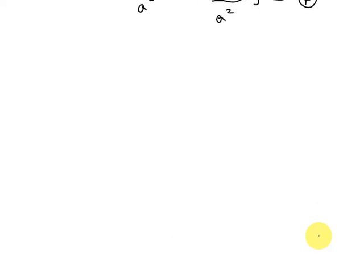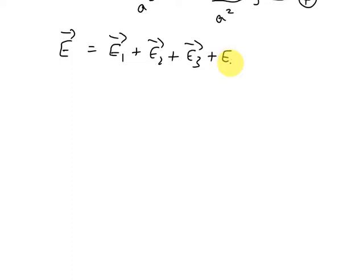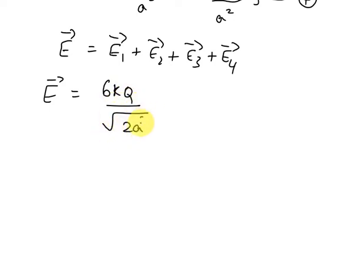Therefore, the net field at P is E vector = E1 vector + E2 vector + E3 vector + E4 vector, which gives E vector = (6KQ / √2 · A²) · (−î − ĵ).